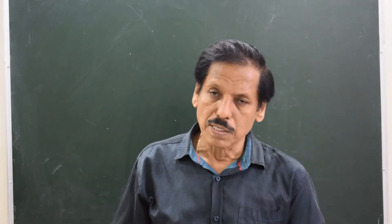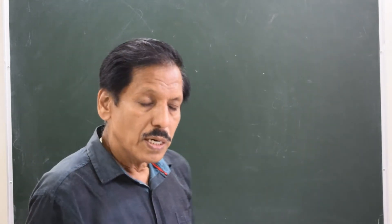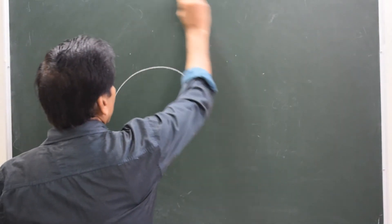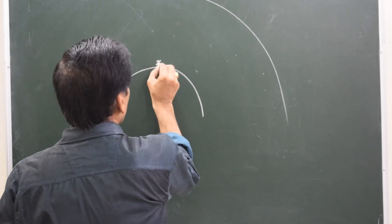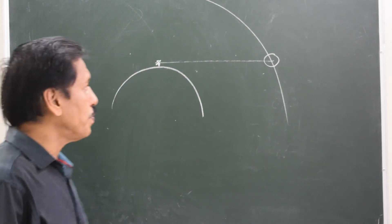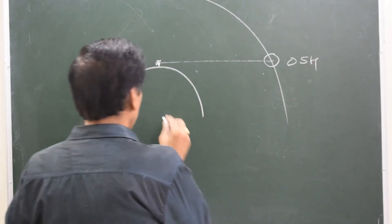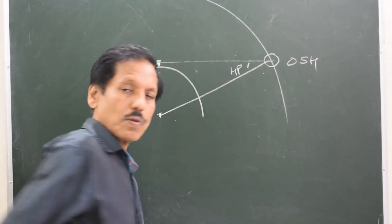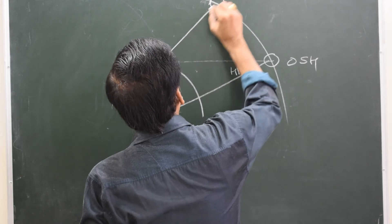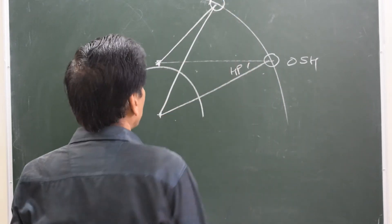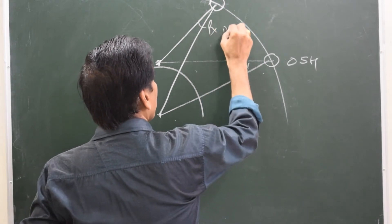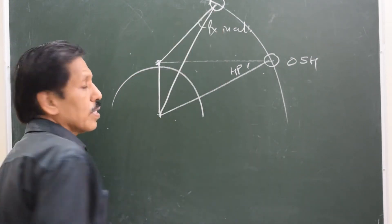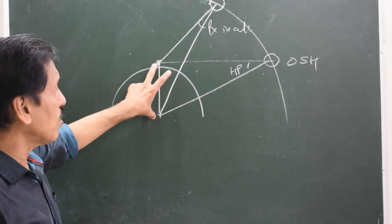Let us try to understand this relationship and its derivation: parallax in altitude equals horizontal parallax into cosine of apparent altitude. Here is the earth and this is the path of the moon. The observer is here, and the moon is at the sensible horizon. Here is the center of the earth. This angle is the horizontal parallax. Now here is the moon at altitude, and this is the parallax in altitude. Parallax in altitude is the angle at the center of the body subtended by the radius of the earth through the observer.